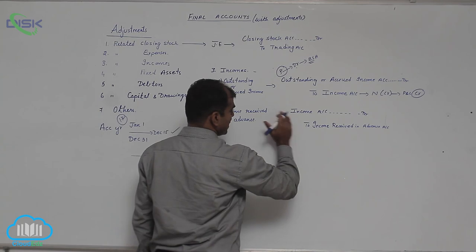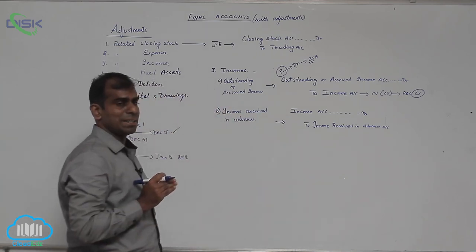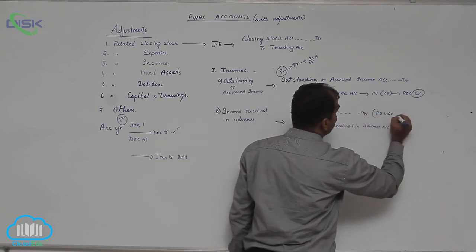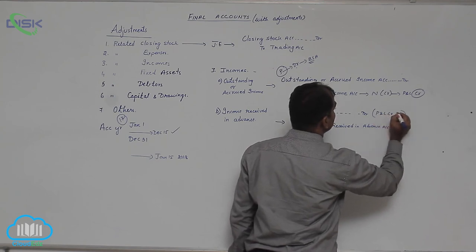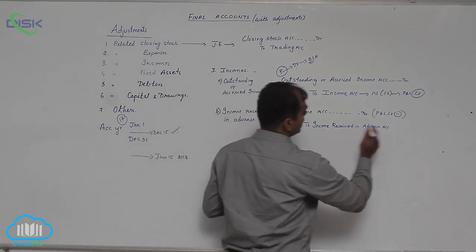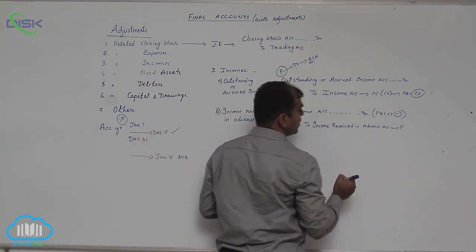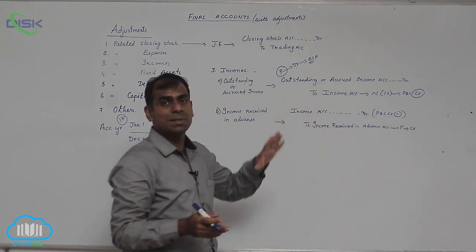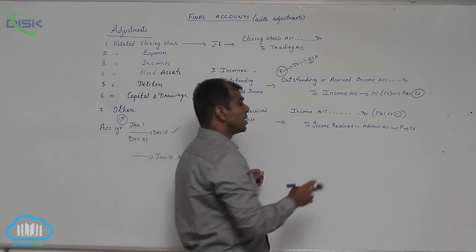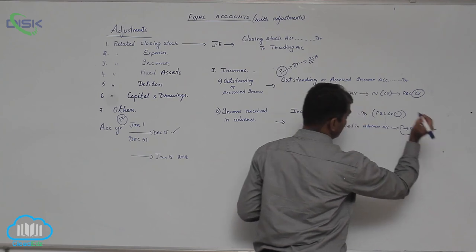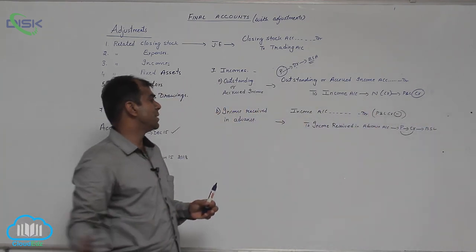Similarly, for income received in advance: income is debited, so we minus this amount from the concerned income on the P&L account credit side. Income received in advance is a personal account that is credited, and personal accounts with a credit balance are shown on the liability side of the balance sheet. This is what you need to understand.